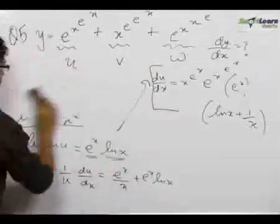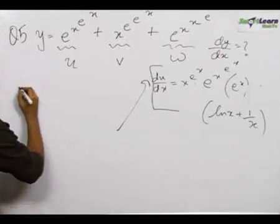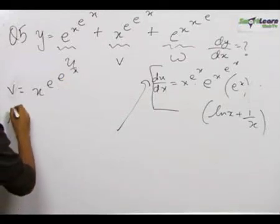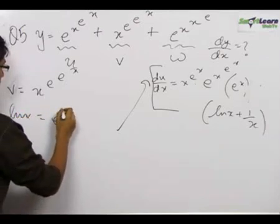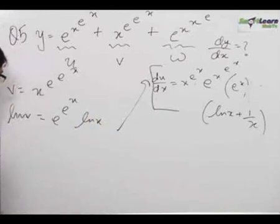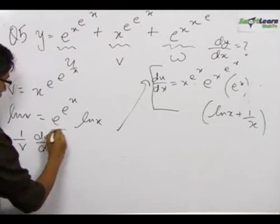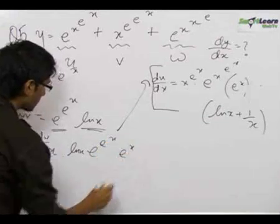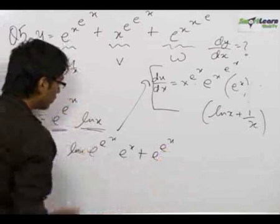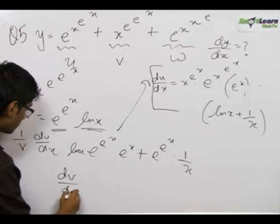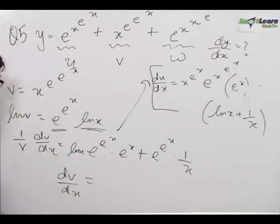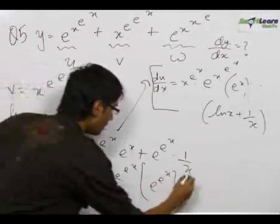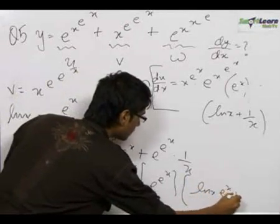Now we find dv by dx, where v equals x to the power e to the power e to the power x. We take ln of both sides to get ln v equals e to the power e to the power x into ln x. Differentiating both sides, we get 1 by v times dv by dx equals e to the power e to the power x into ln x into e to the power x, plus e to the power e to the power x into 1 by x. So dv by dx equals x to the power e to the power e to the power x, times e to the power e to the power x, times (ln x into e to the power x plus 1 by x).